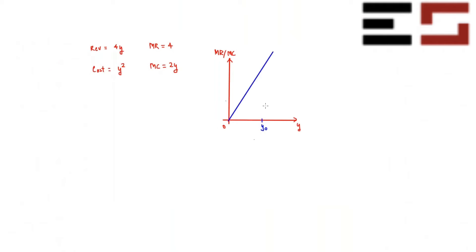The marginal cost curve is a straight line through the origin with slope two. To find total cost at y-naught, compute the integral of marginal cost from zero to y-naught, which equals the area of the triangle under the marginal cost curve.